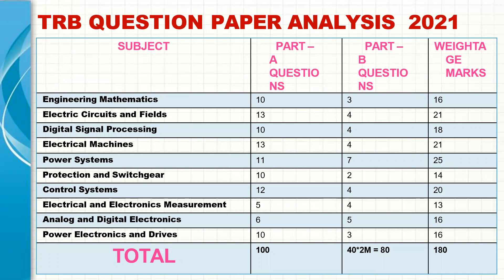This is the recent TRB exam question paper analysis. Engineering Mathematics is Part A — 10 one-mark questions and 3 two-mark questions, totaling 16 marks. Electrical Circuits and Fields has 13 one-mark questions and 4 two-mark questions in Part A, totaling 21 marks.